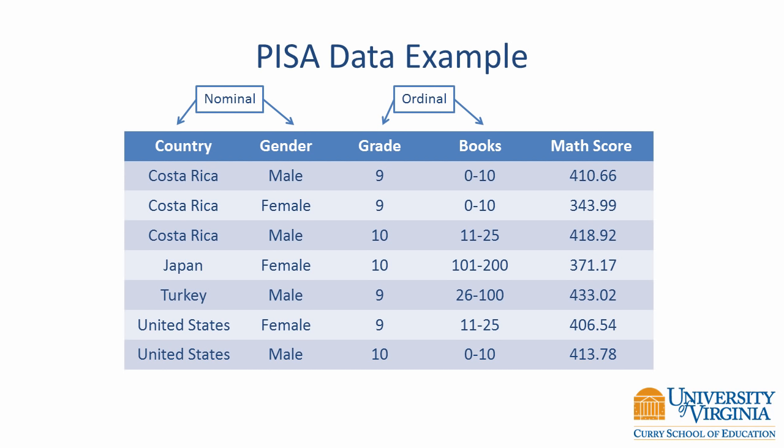The last variable is an interval scale. Math scores do not have an absolute zero, but units are the same. Test scores are commonly assumed to be interval, and PISA involves a scaling methodology that helps guarantee that the scale is actually an interval scale.